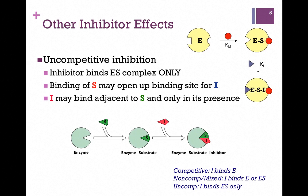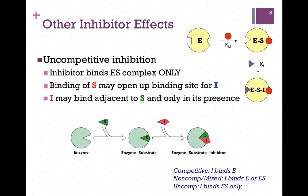The next type is uncompetitive inhibition. In this case, the inhibitor binds only the enzyme-substrate complex. For a competitive inhibitor, the inhibitor bound only the free enzyme. In non-competitive or mixed inhibition, the inhibitor can bind either the free enzyme or the enzyme-substrate form. In uncompetitive inhibition, the inhibitor only binds the enzyme-substrate complex.